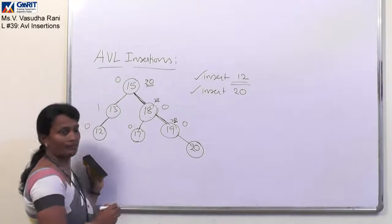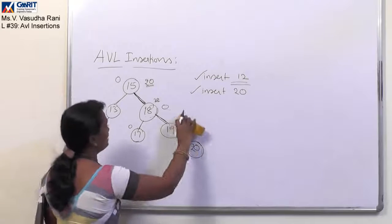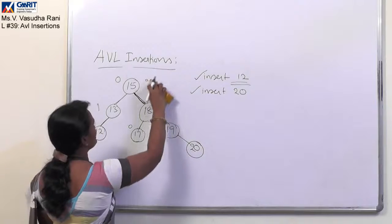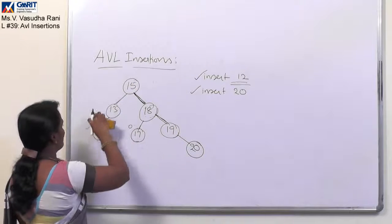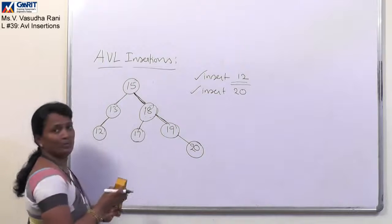We have to go in the right chain of 19. So 20 will come here. By adding this 20 into our binary search tree which has to satisfy the AVL property.